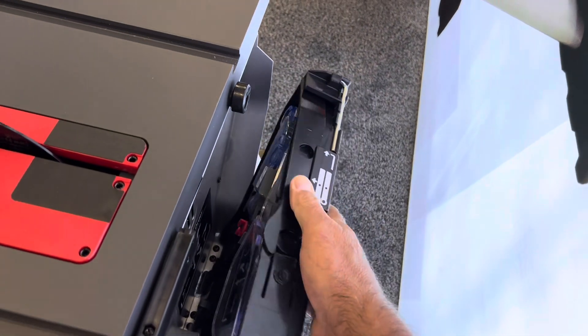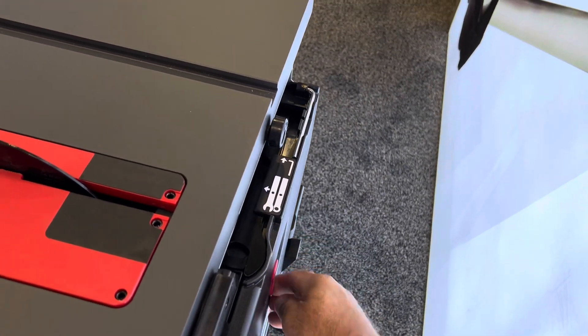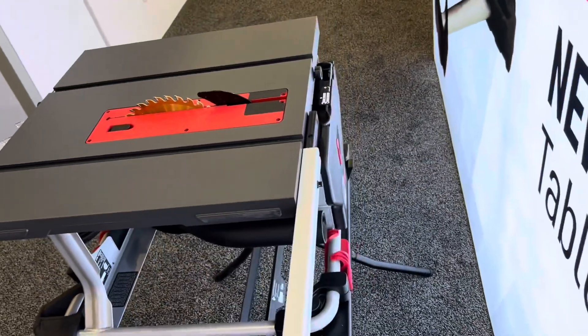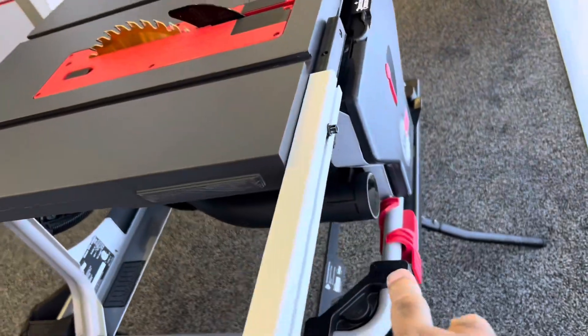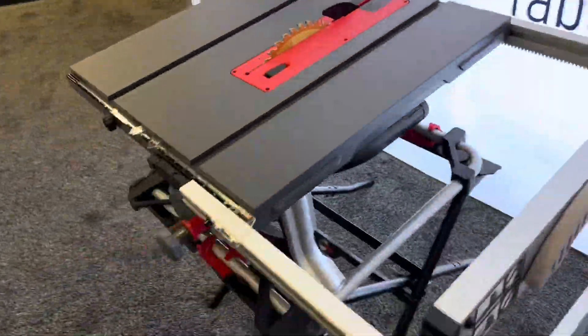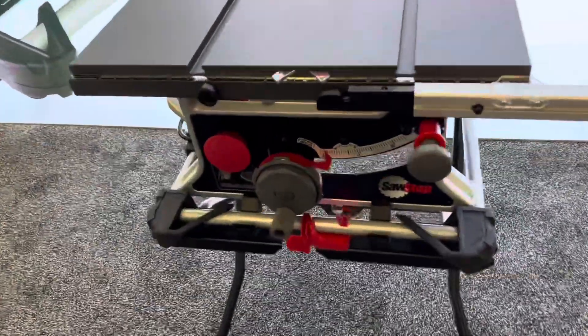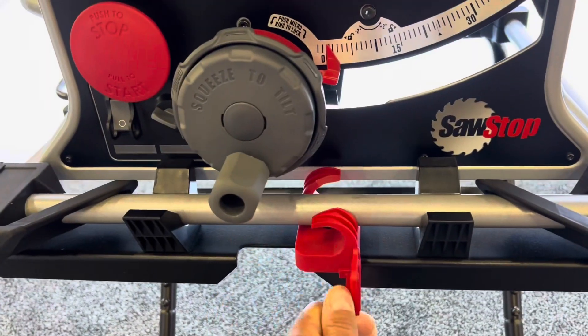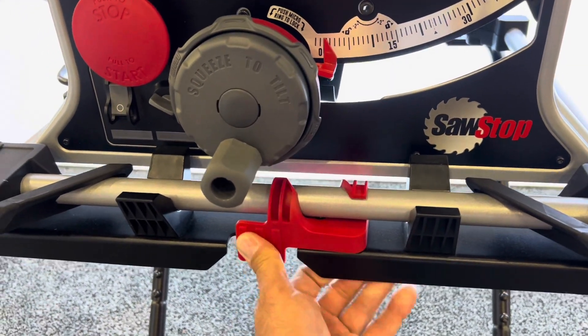He was explaining the OSHA requirement is that riving knife is near the saw so it's contained right there. It's got a dust port on the bottom and then it has a stand. The stand locks nice, locks the saw and you can lift it off, lock it in place.